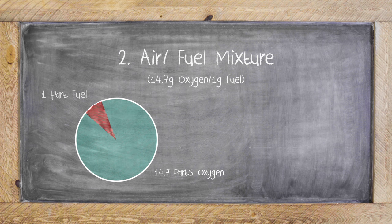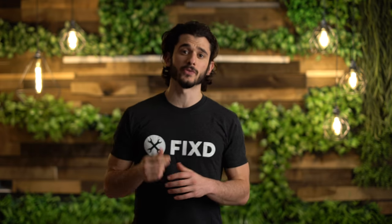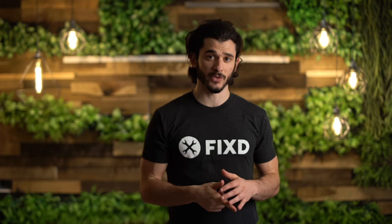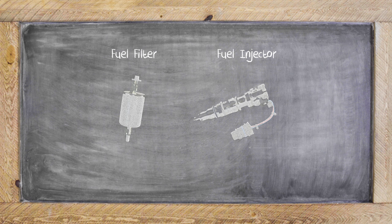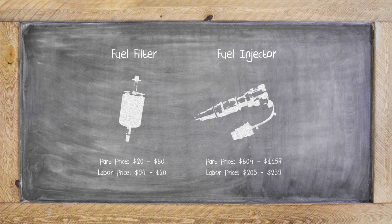Second, it could be on the fuel side of the mix. This usually has to do with a fuel injector or a fuel filter. Between the two, we suggest changing those fuel filters first because this is usually a cheaper fix — around $20 to $60 without the labor — whereas the injector is electric and is a little bit more complicated piece of machinery, and it can be anywhere from $600 to $1,100 for the parts alone.